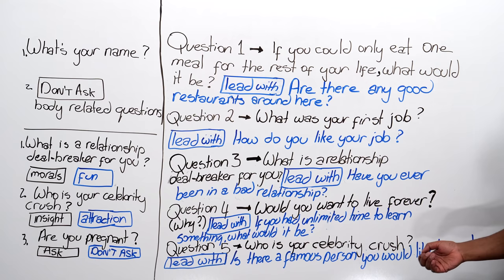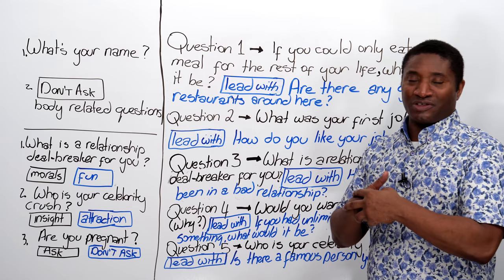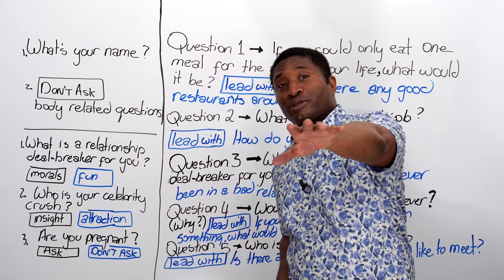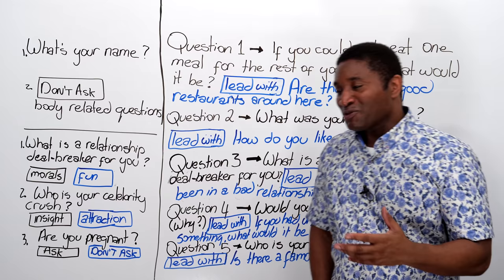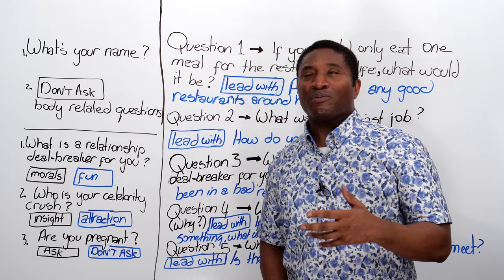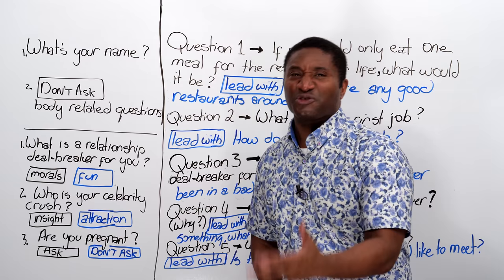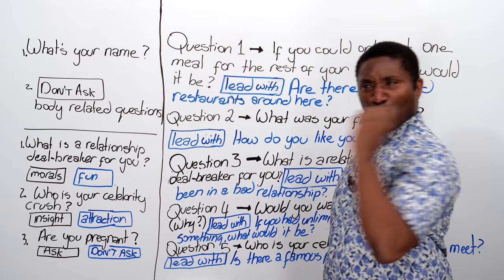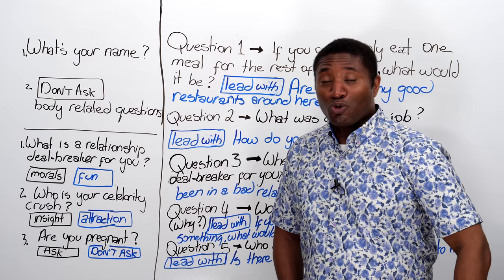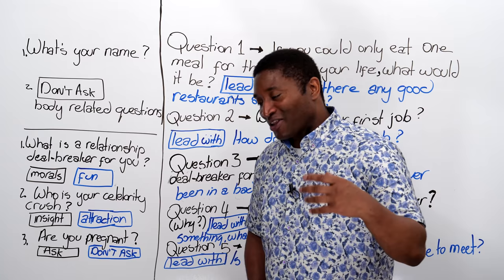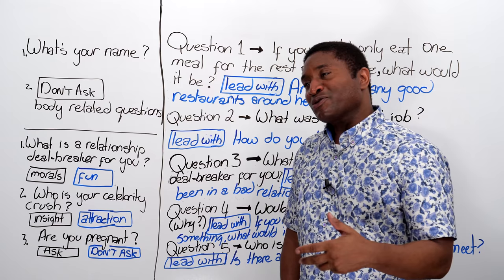Question number five: who is your celebrity crush? A crush is when you have romantic feelings towards someone. Tom Cruise was considered the heartthrob — people loved him because he was dangerous and adventurous. Some people liked Harrison Ford because he was mature — intelligence and bravery, like Indiana Jones. Some people had a crush on Arnold Schwarzenegger because he was very huge, he had the muscles. So that tells you a lot about what they find attractive. When someone tells you their celebrity crush, they're telling you what they find attractive in a man or a woman.